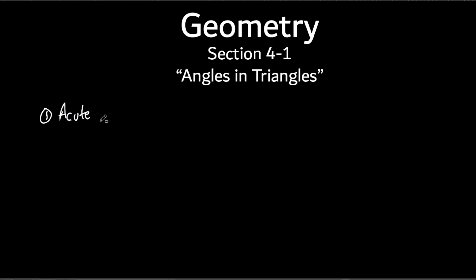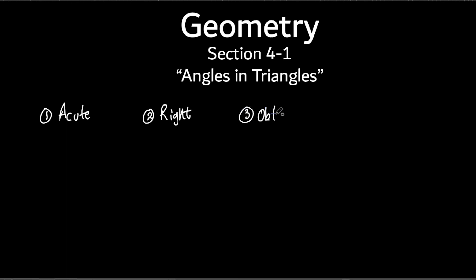We mentioned this yesterday — I'm going to go over it again so it's recorded for posterity's sake. Here are three of the triangle types: one is an acute triangle, the second is a right triangle, which we mentioned a little bit yesterday, and the third is an obtuse triangle. We'll deal with the other three after we get through these.